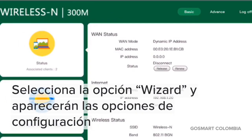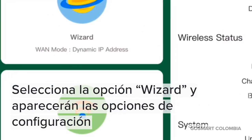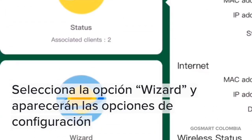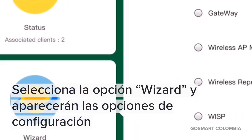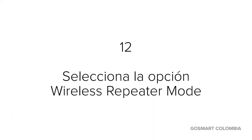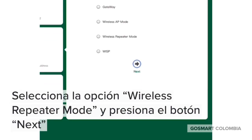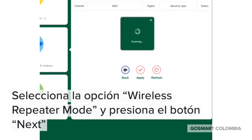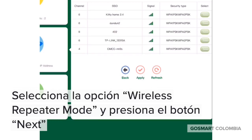Ahora seleccionamos la opción Wizard. Selecciona la opción Wireless Repeater Mode. Presiona el botón Next y el repetidor buscará las redes de Wi-Fi cercanas.